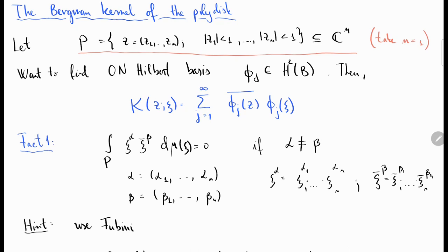In the previous video I explained that to find the Bergman kernel all you need to do is find an orthonormal Hilbert basis, let's call phi j, of the Hilbert space of square integrable holomorphic functions on the ball. Once you have such a thing in your hand, then the Bergman kernel will be just this infinite sum where you put phi j of z bar times phi j of xi.